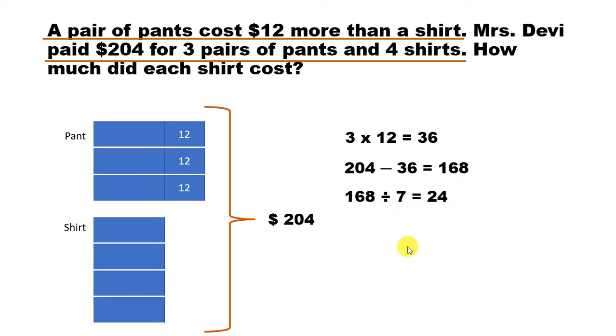So 7 units is 168, so 1 unit will be 168 divided by 7 which is 24. Each of these units is 24. Now the shirt costs $24. That's what we have seen here. 1 shirt costs $24 and a pant will cost 24 plus 12 which is $36. So this is a quite simple problem. I hope you enjoyed it. Now let's move on to the next question.